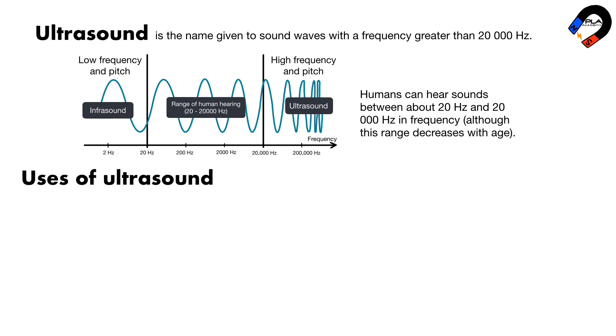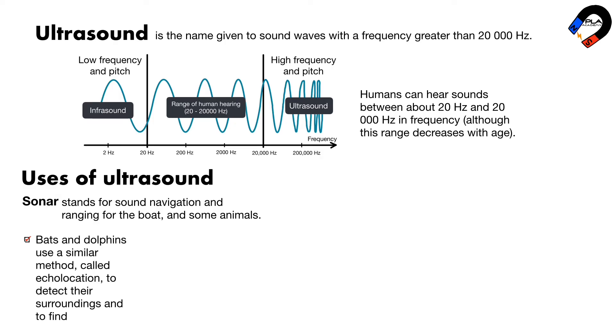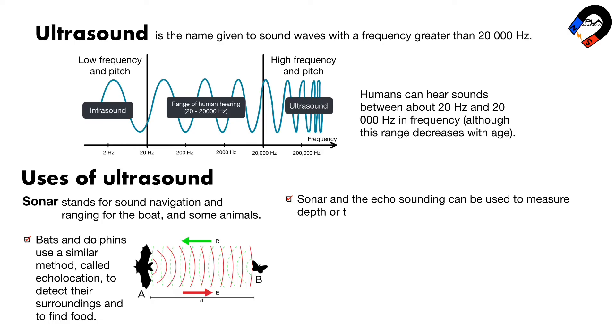The uses of ultrasound. Sonar. Sonar stands for sound navigation and ranging for the boat and some animals. Bats and dolphins use a similar method, called echolocation, to detect their surroundings and to find food. Sonar and the echo sounding can be used to measure depth, or to detect objects underwater. A sound wave can be transmitted from the surface of the water.